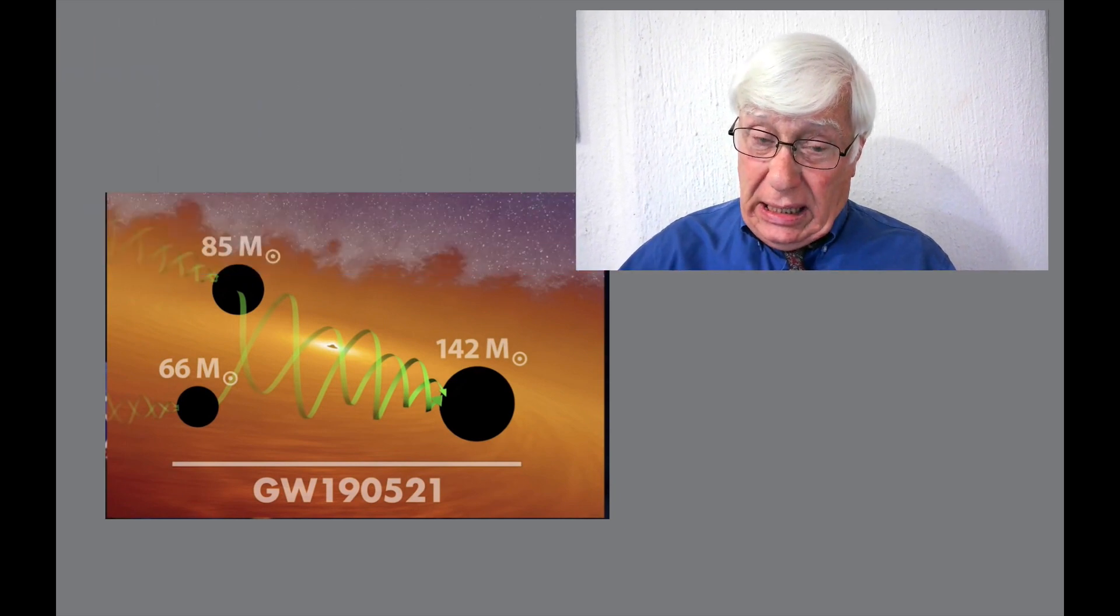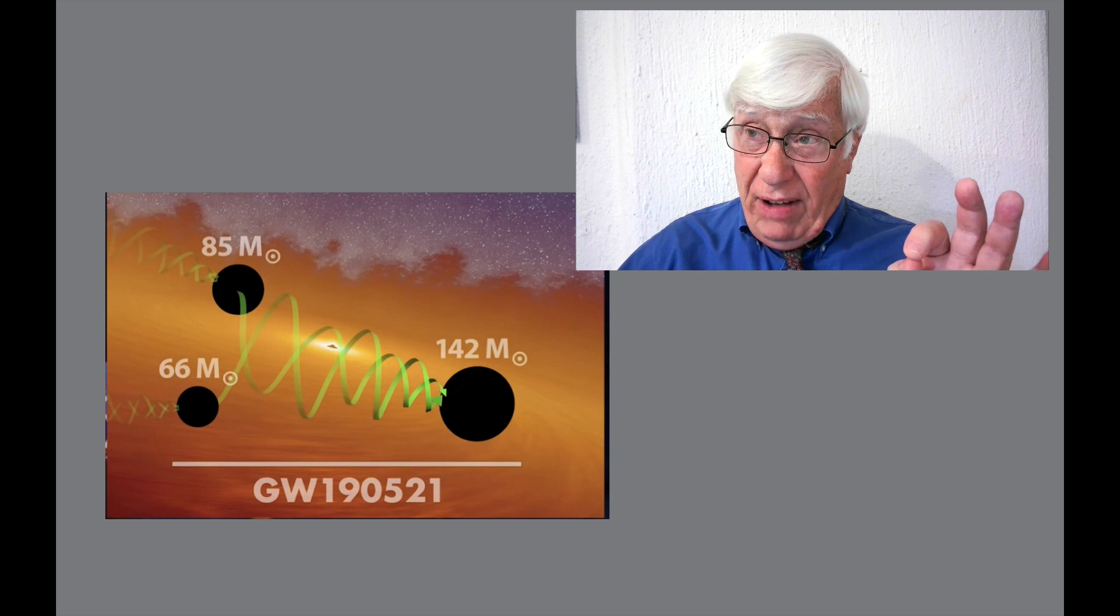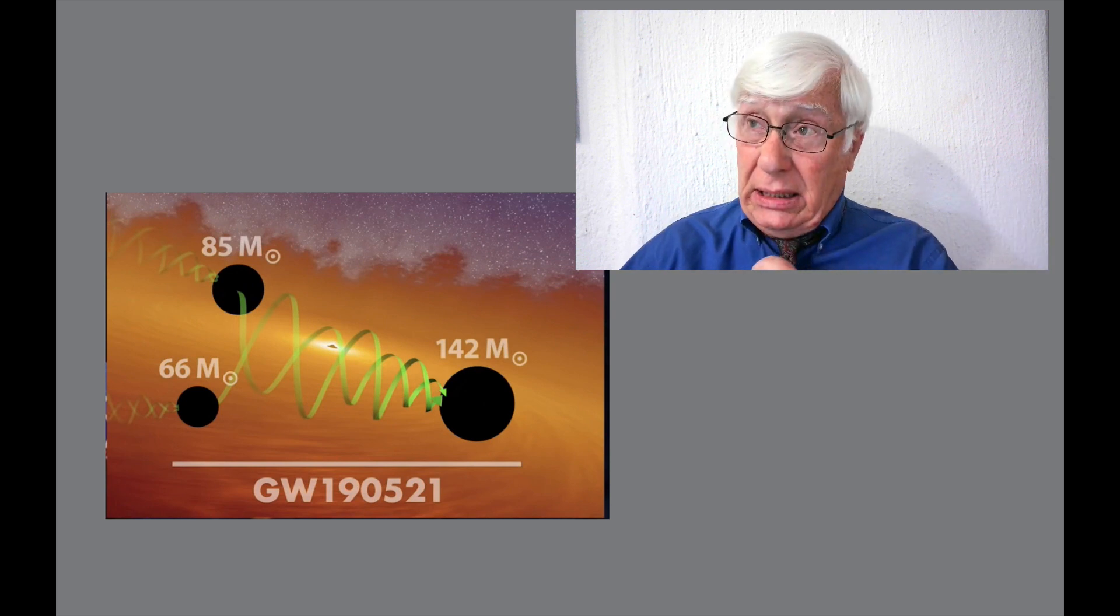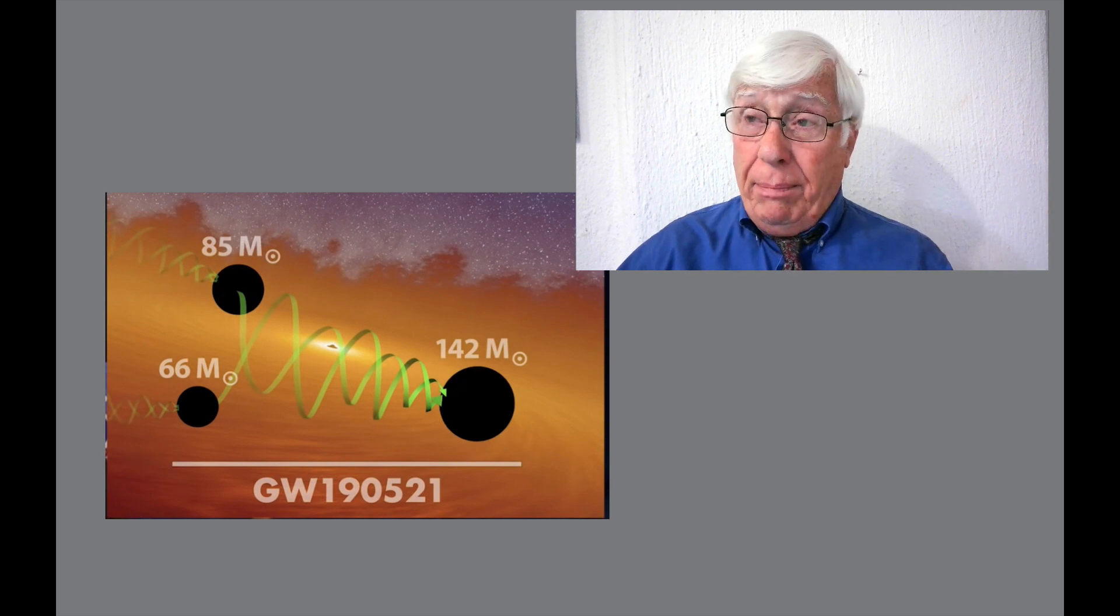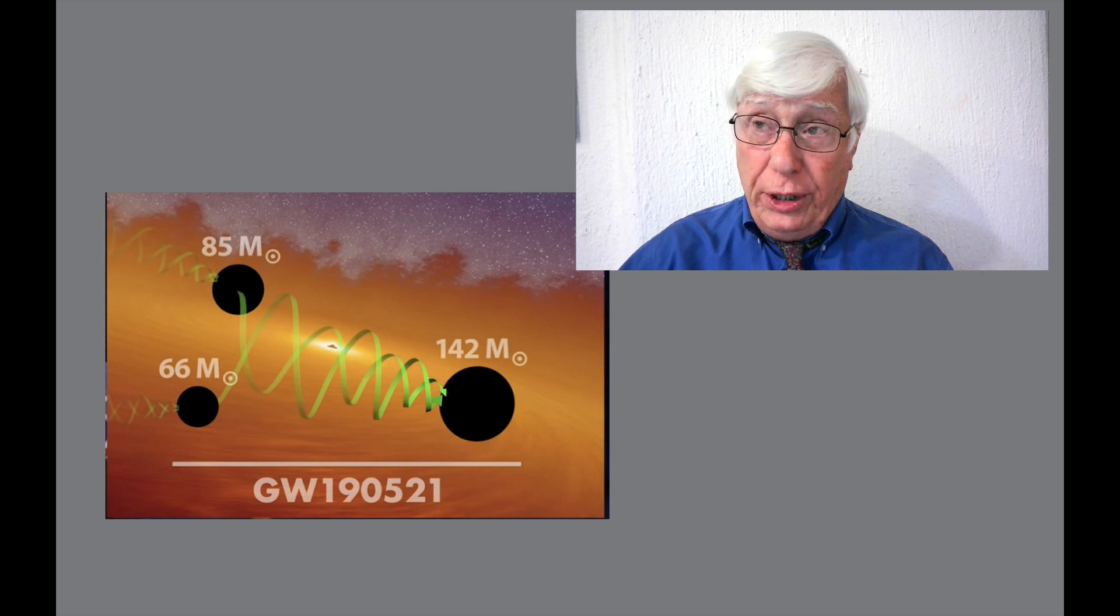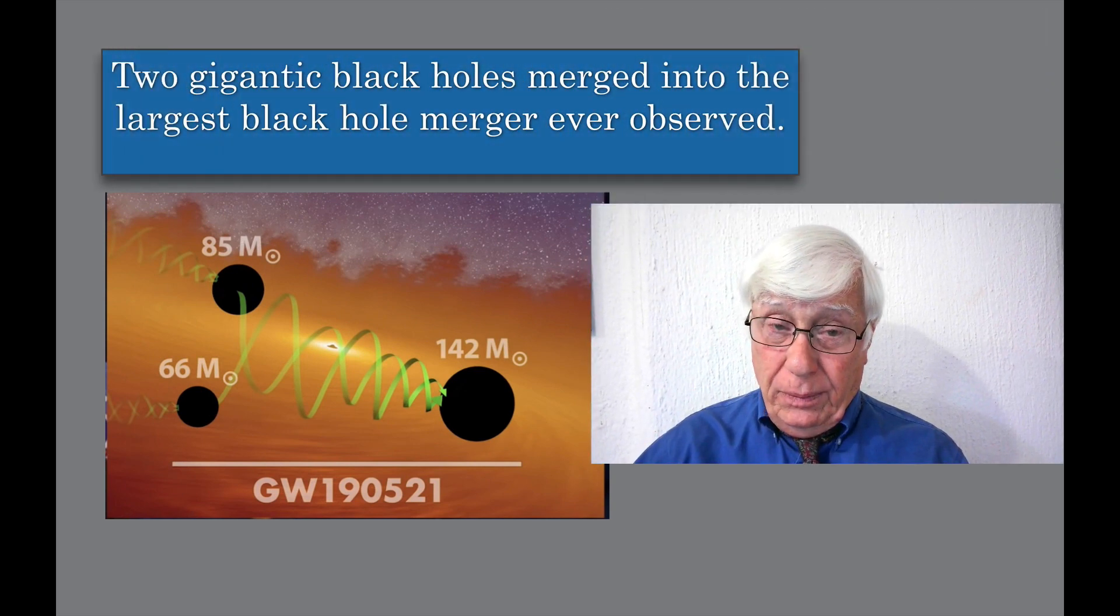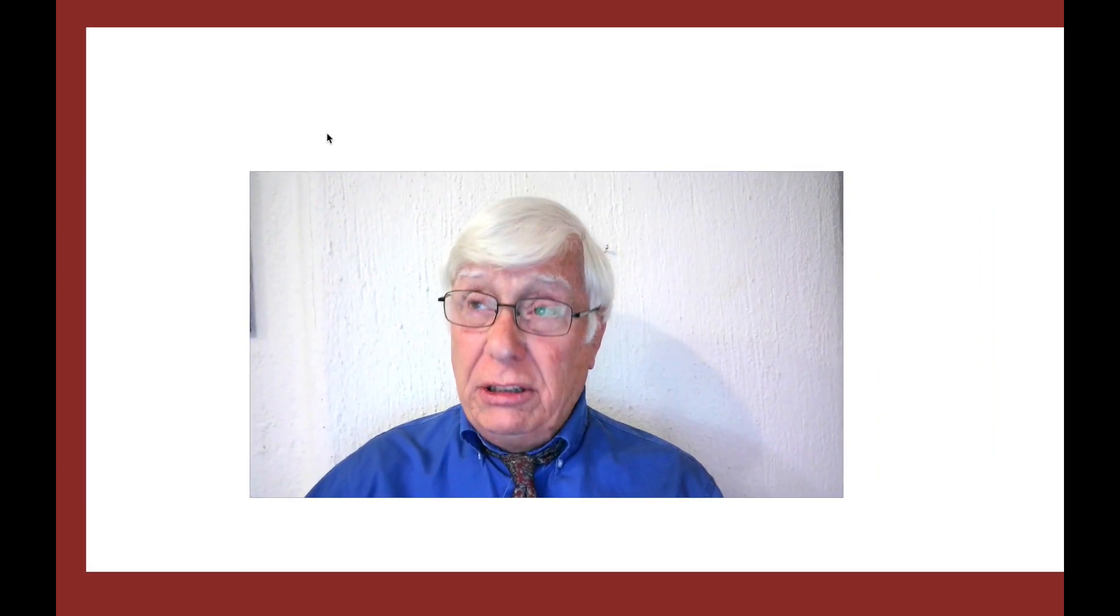So this is the first black hole, which was 85 solar masses. I think that means the size of the sun. 66 solar masses, they combined and made a gigantic black hole that was 142 solar masses. It was the biggest black hole merger ever seen.